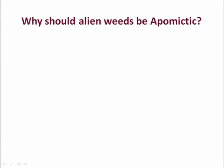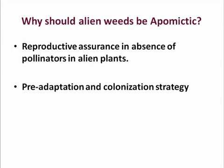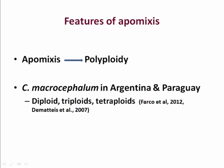We asked ourselves why alien invasives might be apomictic. Because apomixis provides reproductive assurance, especially in the absence of pollinators — when alien plants are introduced into a country, they are introduced not only without their natural enemies but also without their adapted pollinators. Therefore it represents a pre-adaptive colonization strategy. Most apomictic plants are actually polyploids. The same study by Papo et al. confirmed that some populations in Argentina and Paraguay are actually diploid, triploid, and tetraploid — a lot of polyploidy in the native range.